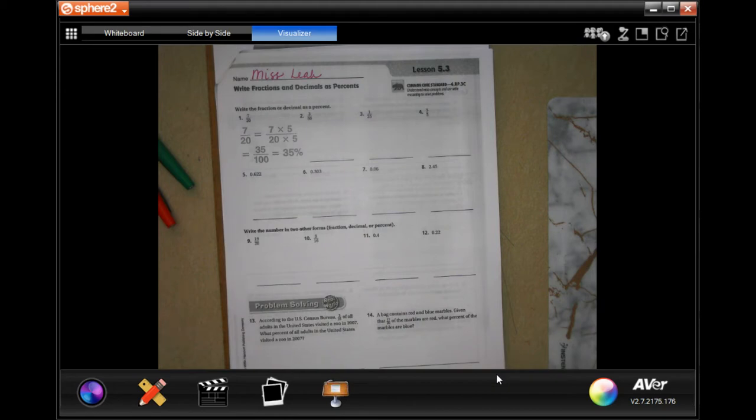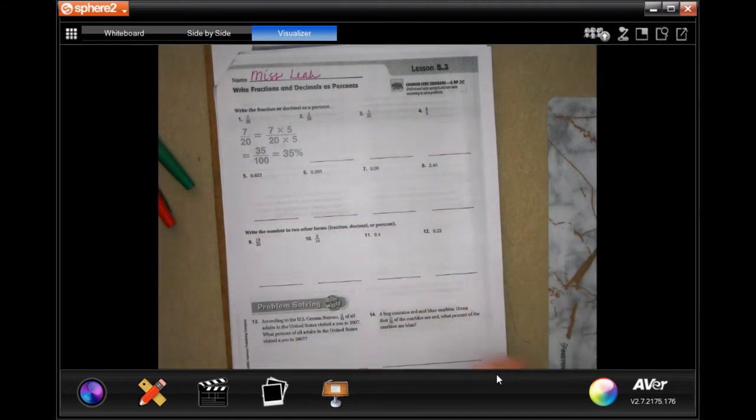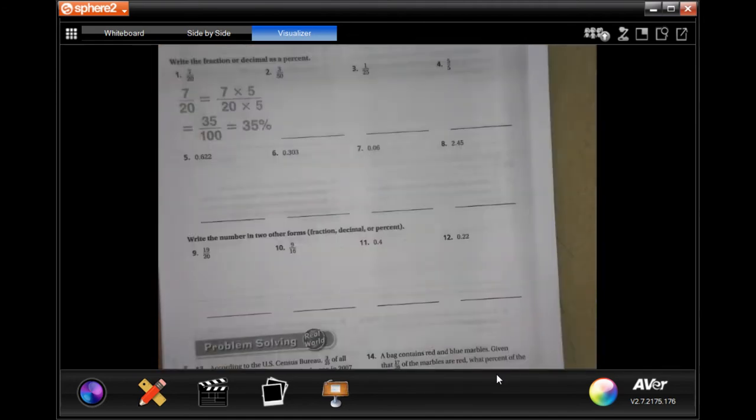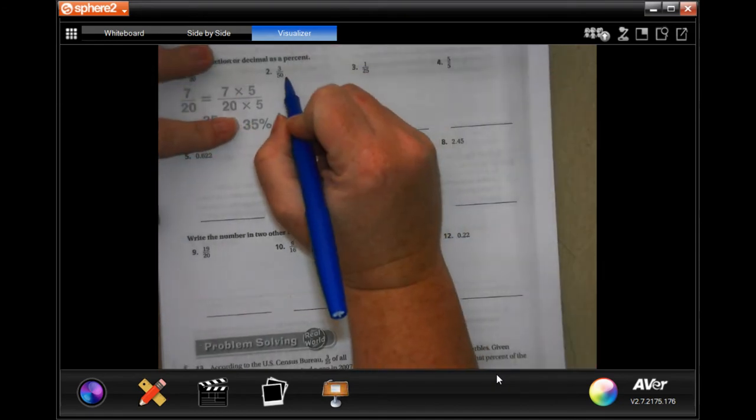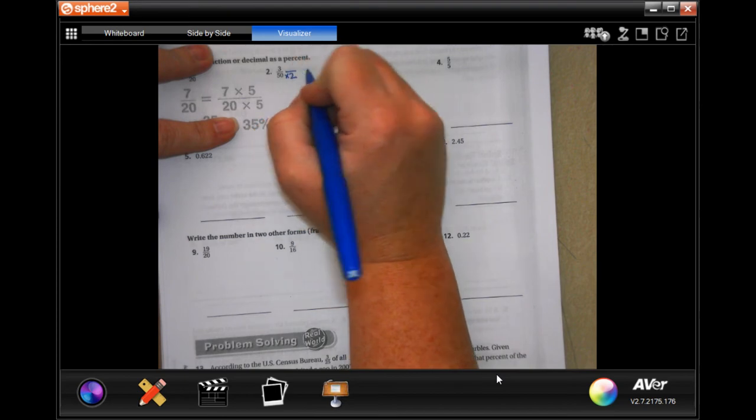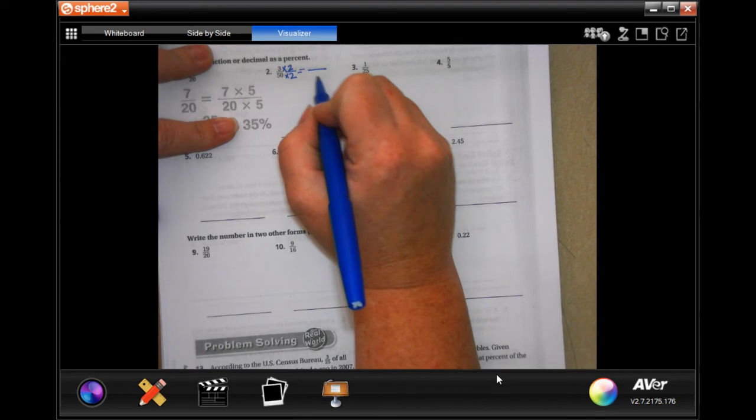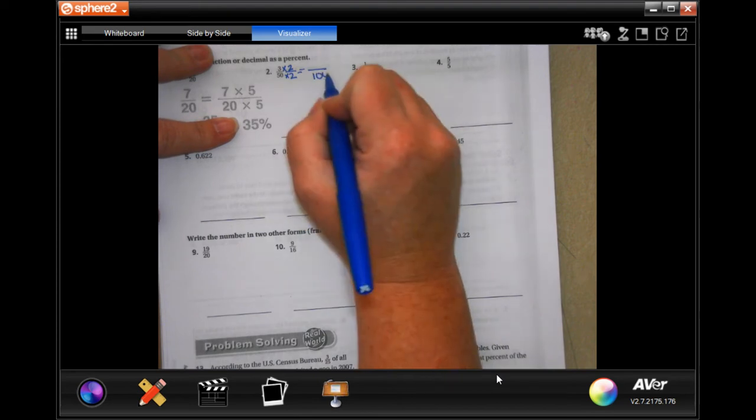The first part of these is all about getting that bottom number to get to 100. So, the first one, the denominator is 50. Well, if we times that by 2, we get 100. We're going to times the top by 2, because whatever we do to the bottom, we have to do to the top.